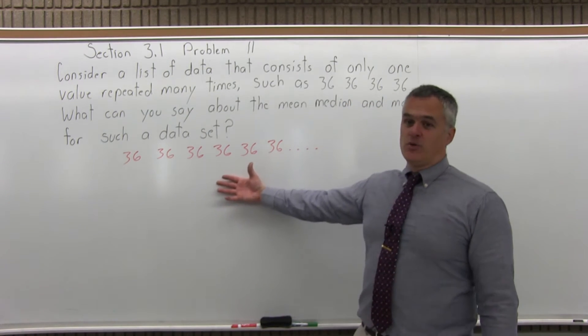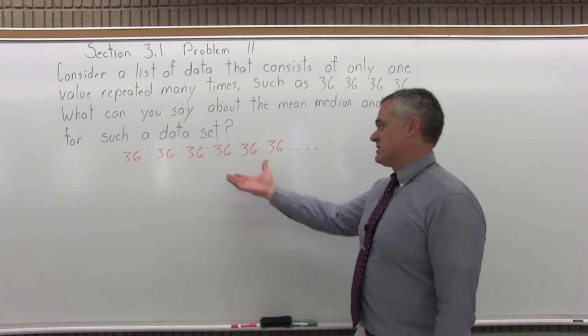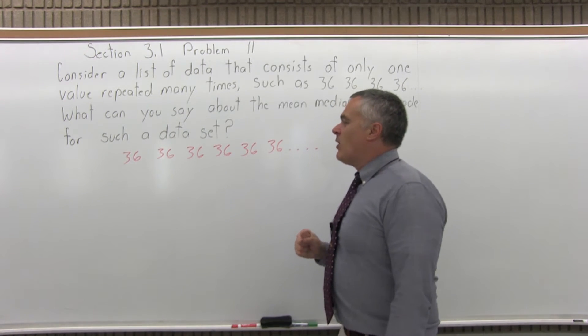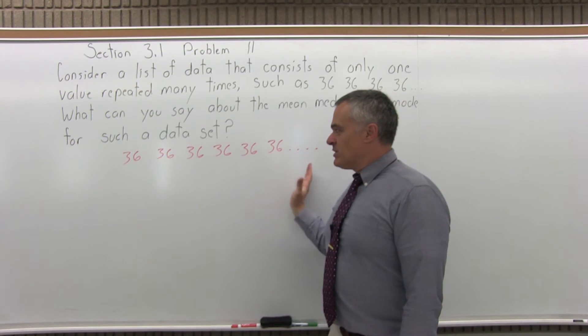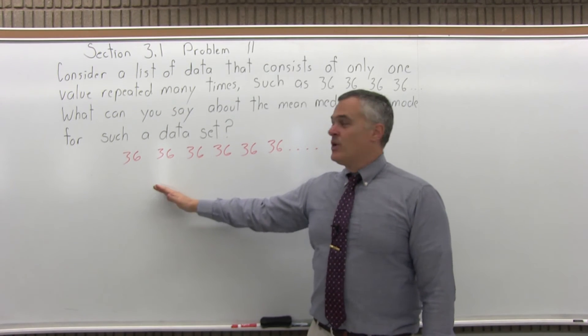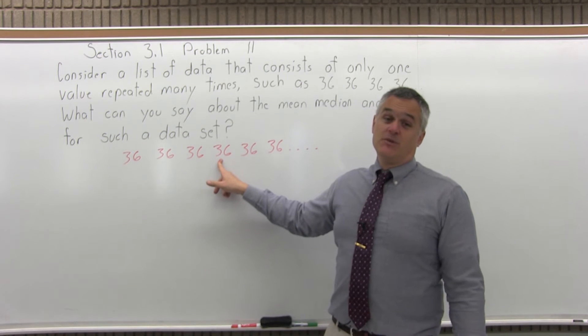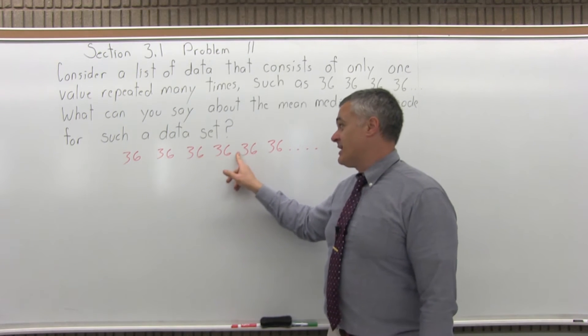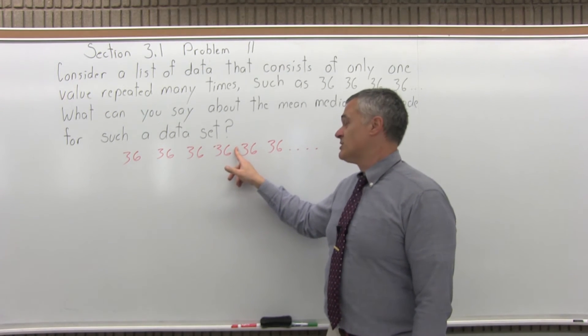For us, the mode, clearly the mode would have to be 36, because that's what's most repeated. How about the median? Well, you put the list in order. What's the middle value going to be? Well, it's going to be 36. If there's an odd amount of data, there's a 36 right in the middle, so your median is 36.